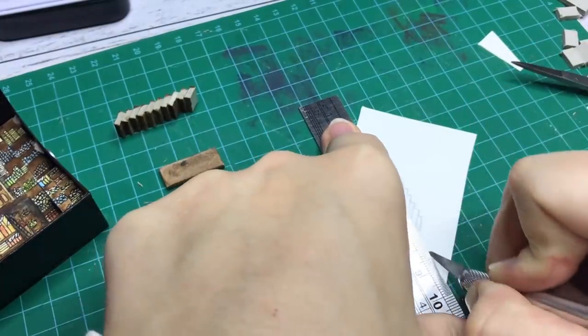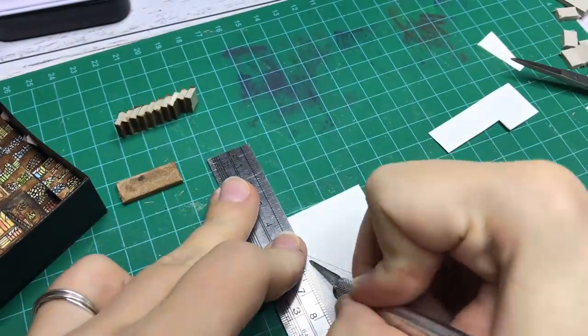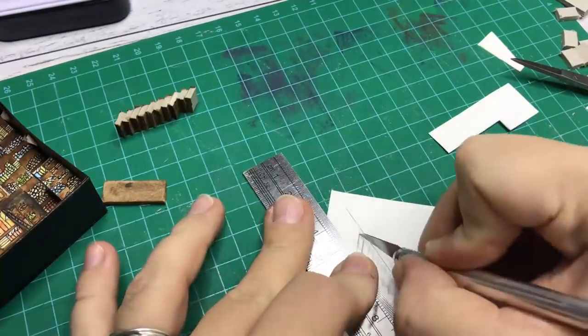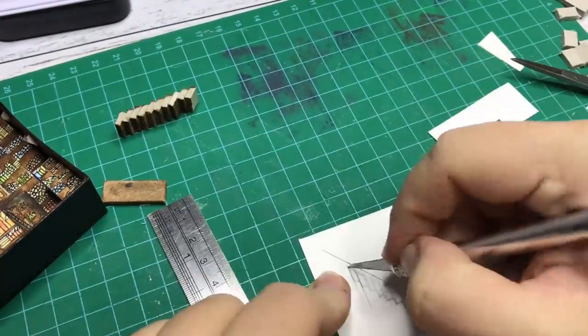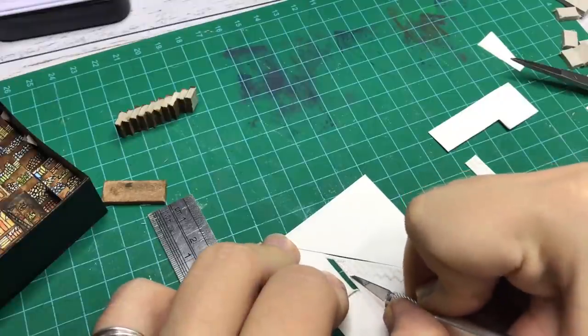From paper I make the handrail for the stairs. This was a tedious thing to do, but I'm so happy with the result. I glued this on with PVA glue by using a toothpick.